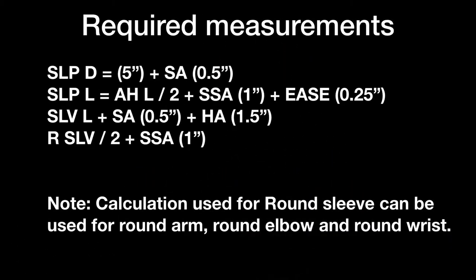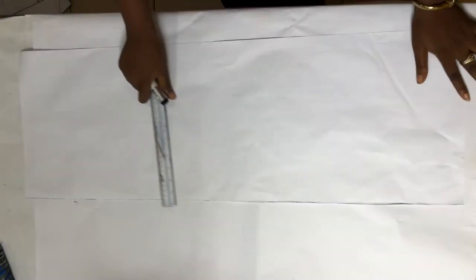These are the required measurements. Slope depth equals 5 inches plus seam allowance 0.5 inch. Slope length equals armhole length divided by 2 plus seam allowance 1 inch plus ease 0.25 inch. Sleeve length plus seam allowance 0.5 inch plus hem allowance 1.5 inches. Round sleeve divided by 2 plus seam allowance 1 inch for my French jacket sleeve.